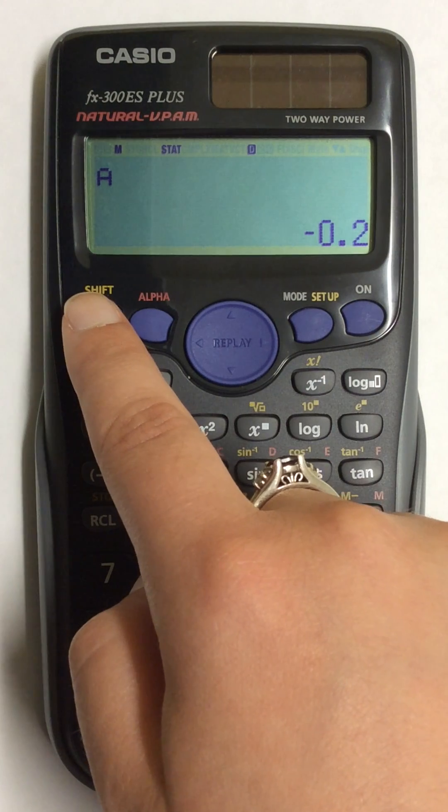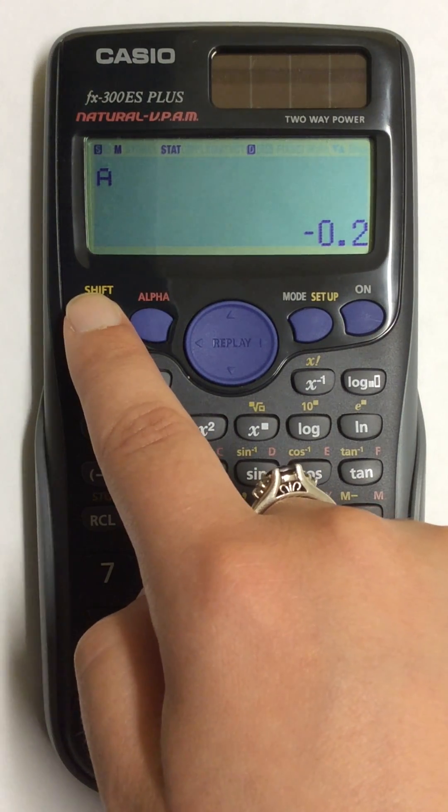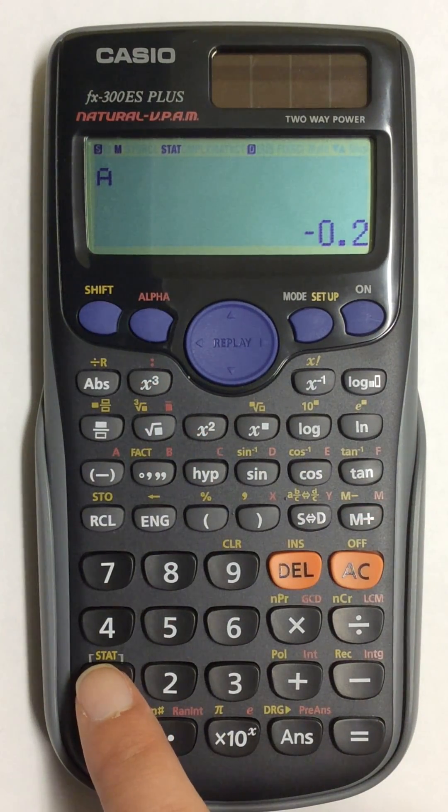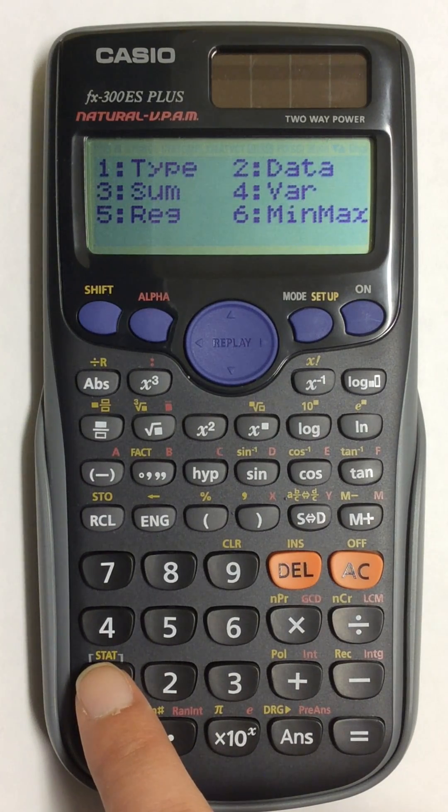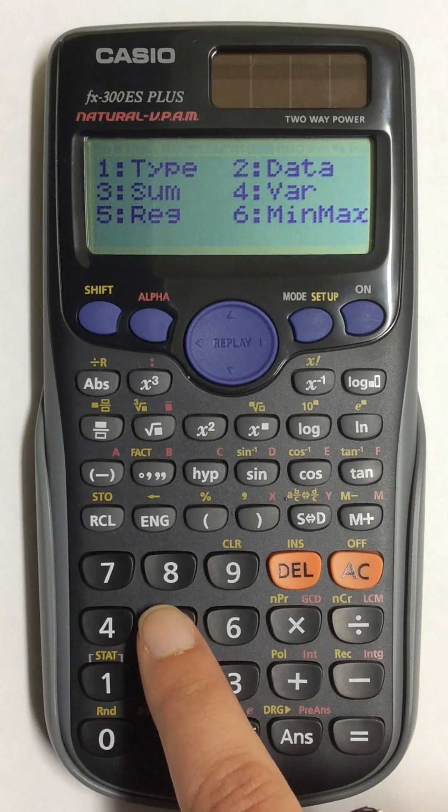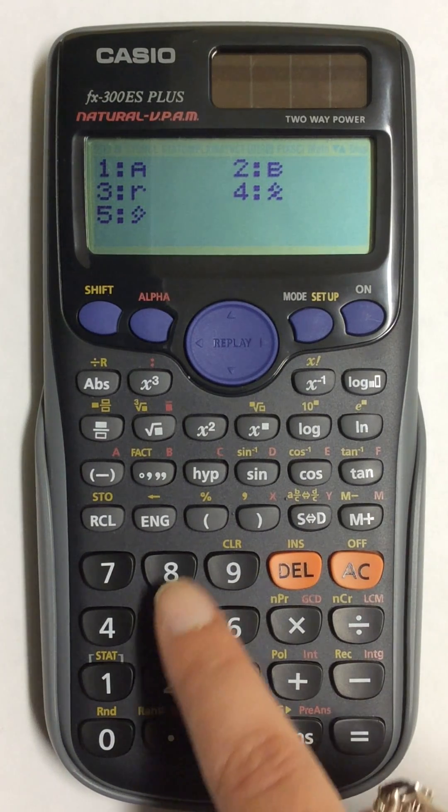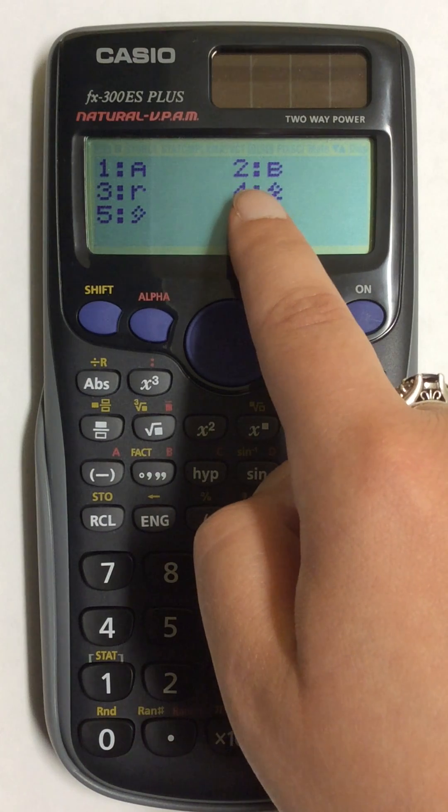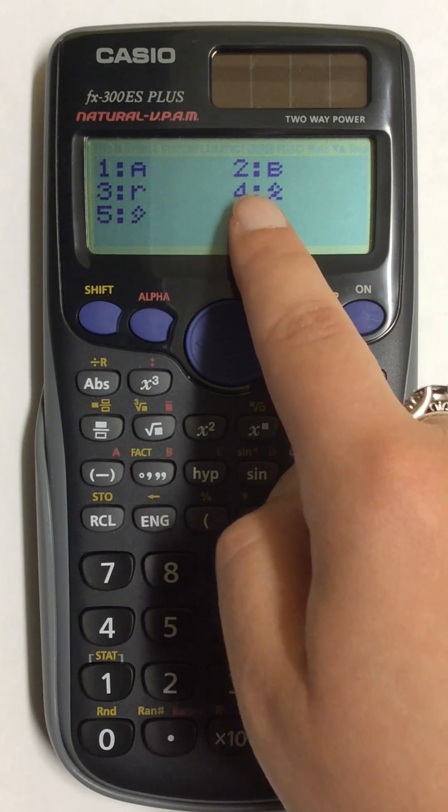To find B, I will go back. I will hit shift again and go back to number 1. I then have to hit 5 again for REG. And now this time I can hit number 2 for my slope.